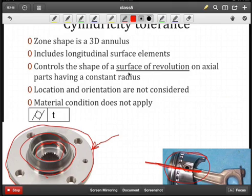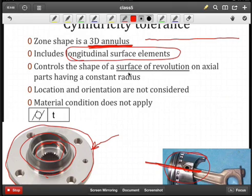The shape of the cylindricity is a 3D annulus. So think of it as taking the 2D annulus and extruding that along an axis. So we'll include all the longitudinal surface elements. By longitudinal, we mean going down the surface here. Simultaneously, we're including all of those in the 3D annulus. You can also think of that 3D annulus as a tube that we're going to try to fit the surface in.